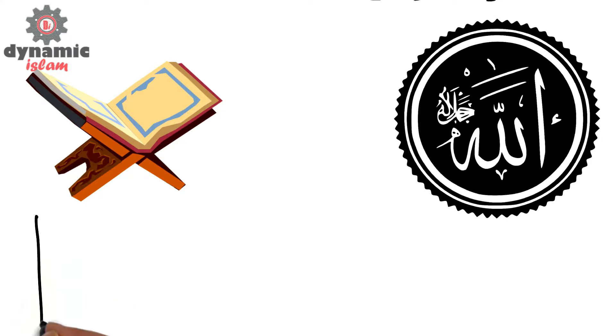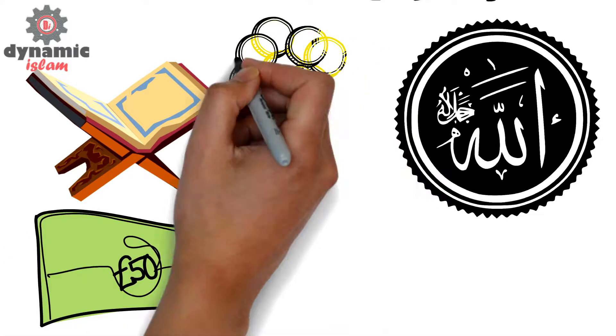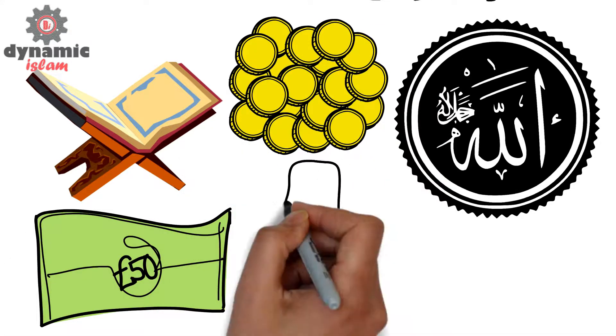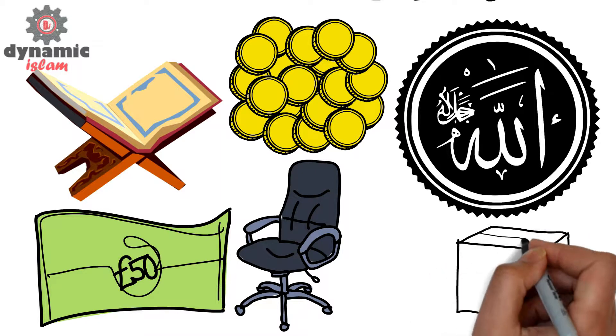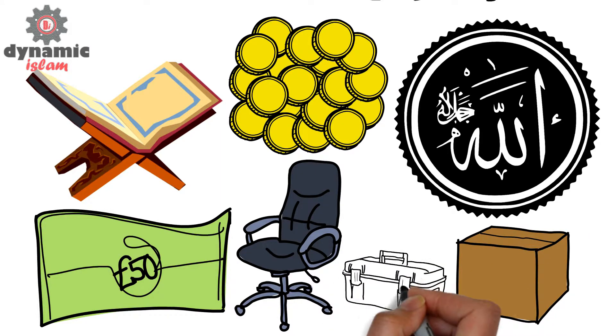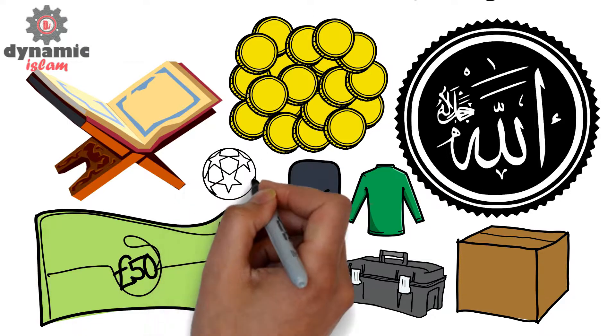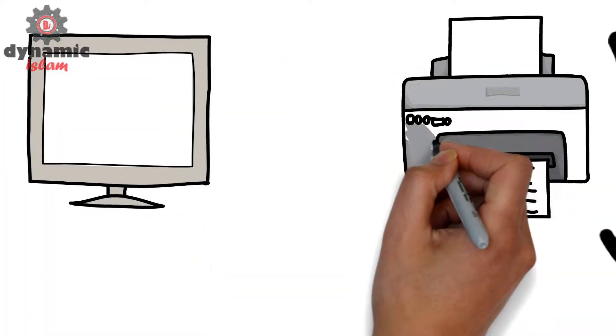But the Quran also tells us that Allah has blessed us with what is called Al-Mal or possessions or material possessions. And from an Islamic perspective, material possessions encompasses a broad array of items that we own, items that we engage in business and selling.